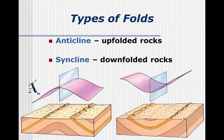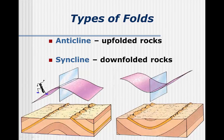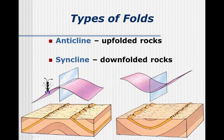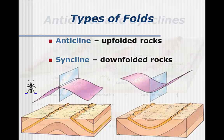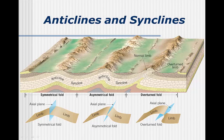The two basic types of folds are anticlines, where the rocks are folded up, and synclines, where the rocks are folded down. The way I learned to remember these was that an anticline has the shape of an anthill. In reality, it is unusual to just see a single anticline or syncline by itself. Instead, you are likely to see a series of anticlines next to synclines: anticline, syncline, anticline, syncline.